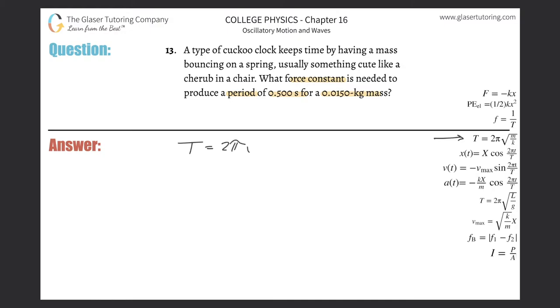It equals 2π multiplied by the square root of the mass of the object that's oscillating divided by the spring constant. Now, spring constant or force constant—tomato, tomato. What they're asking us to do is solve for force constant, so let's solve this bad boy for k.